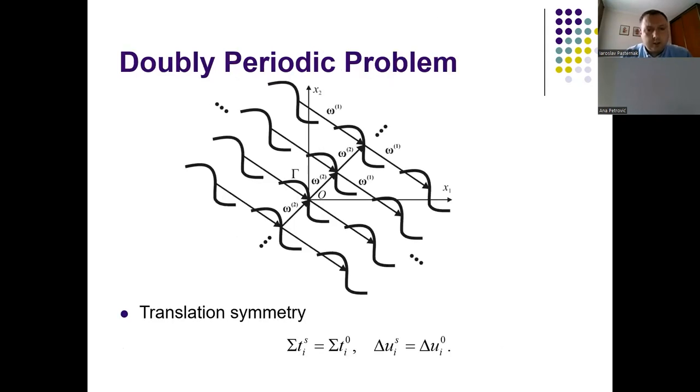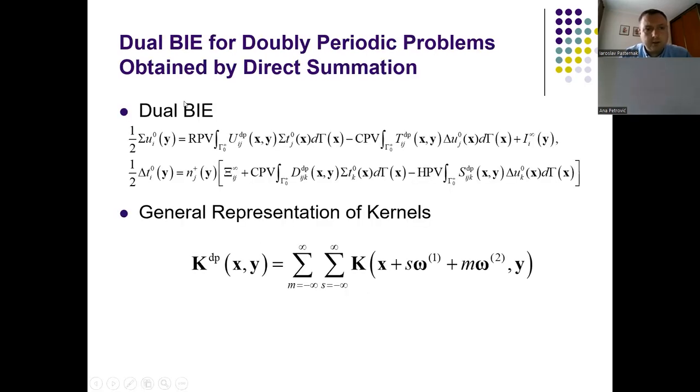Next we considered a doubly periodic problem with a periodic lattice of cracks. We assume that there are two periods omega-1 and omega-2 in different directions. Due to that periodicity, we assume there is a translation symmetry of those thought functions, the displacement discontinuity and traction discontinuity on the crack faces, which allowed us to obtain the dual boundary integral equations for the doubly periodic problem.